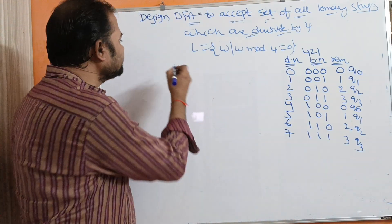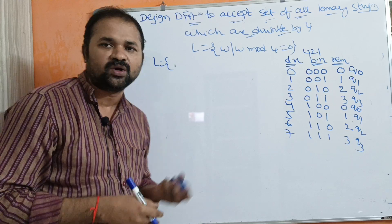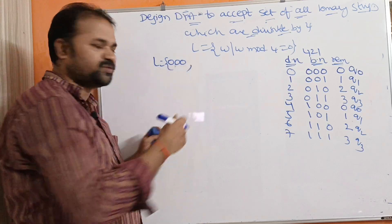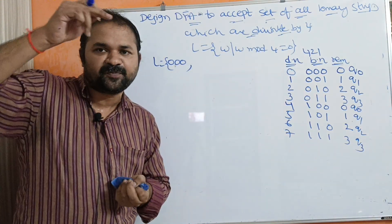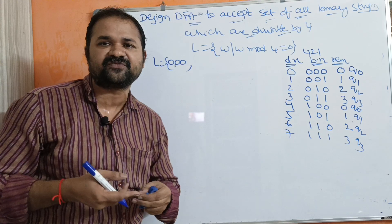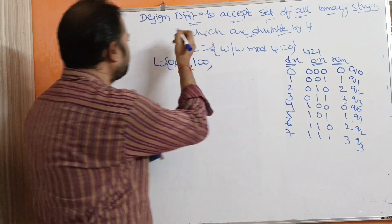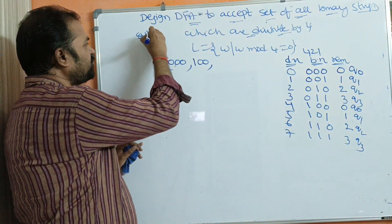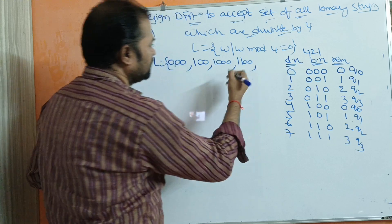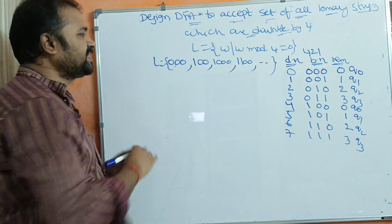Let us write the language: L contains binary representations of numbers divisible by 4. We can represent 0 as double 0. Since divisibility by 4 means modulo 4 equals 0, next is 4 represented as 100, then 8 requiring 4 bits as 1000, then 12 as 1100. We can have any number of such strings.